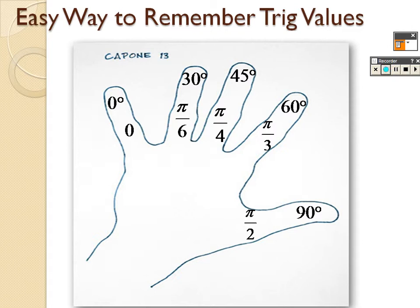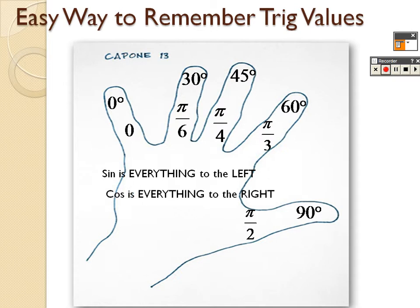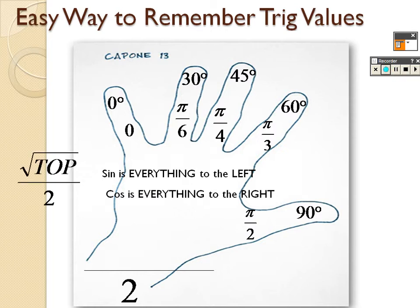For sine of one of those given angles, it is everything to the left of the finger you put down. Cosine is everything to the right. And it's all over 2 — specifically, it is the square root of the count of fingers on that side, divided by 2.